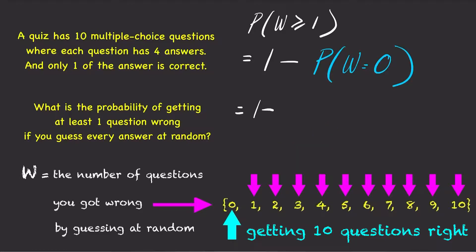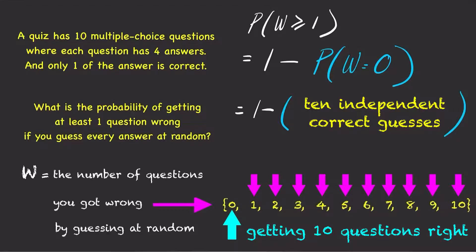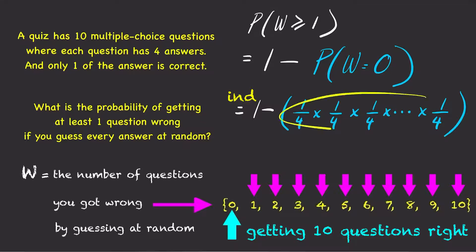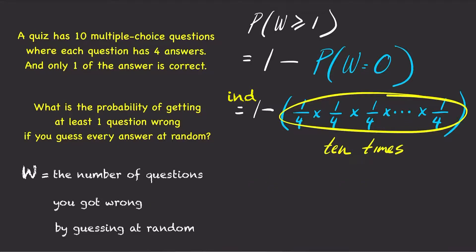But you guess at random 10 times and each guess is independent of all other guesses. So, by the multiplication rule, that's 1/4 times itself 10 times, which is 1/4 to the 10th power.